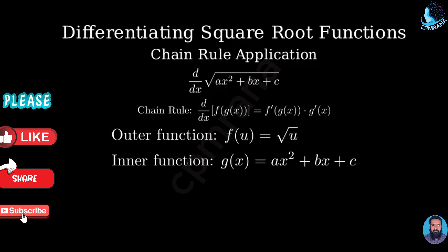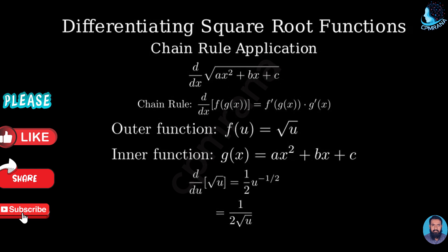Let's handle the outer function first. The derivative of the square root function with respect to u is 1 over 2 times u to the negative one-half power. We can rewrite this as 1 over 2 times the square root of u.